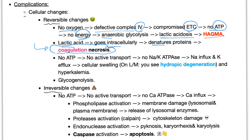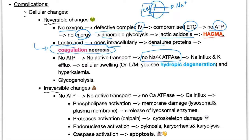Also, no ATP means no active transport, no sodium-potassium ATPase — because this is active transport requiring energy. Therefore, this pump stops working. Normally it shoots sodium out and brings potassium in. When this ATPase is destroyed, sodium comes in, potassium goes out. If sodium comes in, water comes in — hashtag osmosis — leading to cellular swelling. On light microscopy you will see hydropic degeneration. And of course hyperkalemia. Glycogenolysis also occurs: the cell destroys glycogen to generate more glucose to make energy.